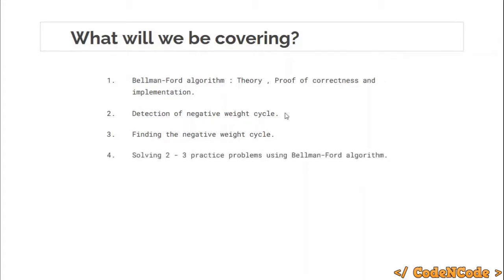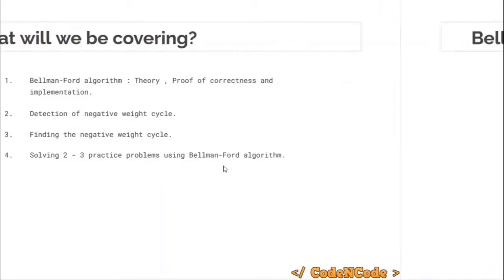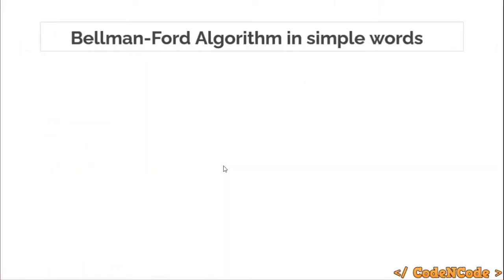In this mini series we'll first cover Bellman-Ford algorithm in detail — the theory, the proof of correctness (which most people don't cover), and the implementation. Then we'll study detection of negative weight cycles, and then finding the actual negative weight cycle by printing it. After that we'll solve two or three problems to reinforce the concepts.